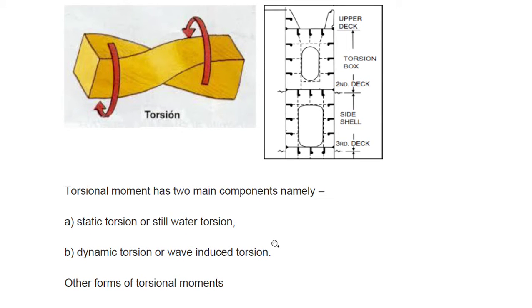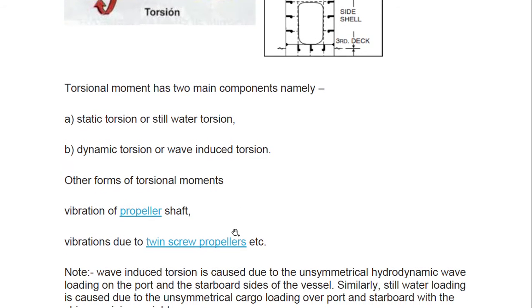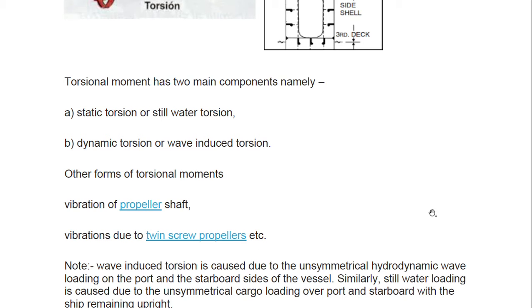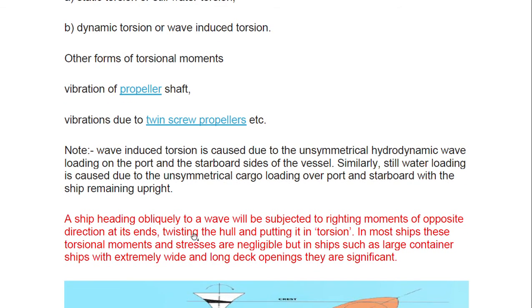Torsional moment has two main components: static torsion (still water torsion) and dynamic torsion (wave-induced torsion). Other forms include vibration of the propeller shaft and vibration due to twin screw propellers. Wave-induced torsion is caused by unsymmetrical hydrodynamic wave loading on the port and starboard sides. Still water torsion is caused by unsymmetrical cargo loading over port and starboard with the ship remaining upright.